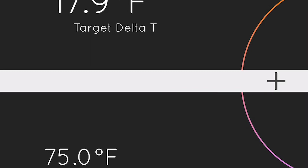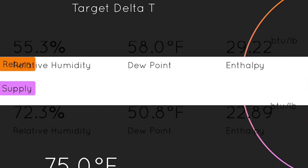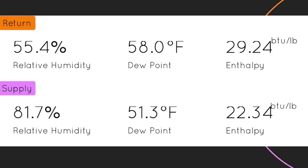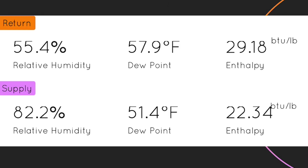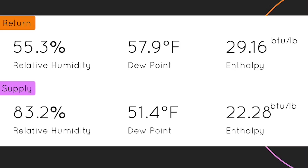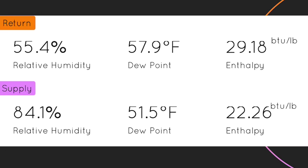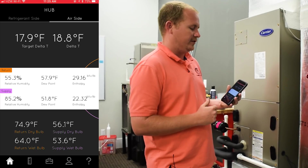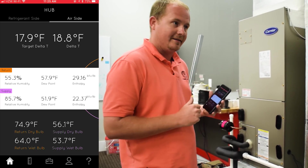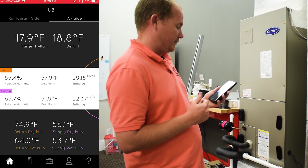You hit this plus button. On the screen right now we have two different enthalpies. Enthalpy is like total heat content. The enthalpy of the return is 29.16 currently, and the enthalpy of the supply is 22.27 currently. Your differential is your enthalpy split. We're going to let it run a little bit and then see what our enthalpy split is, and use that to calculate our total system capacity.